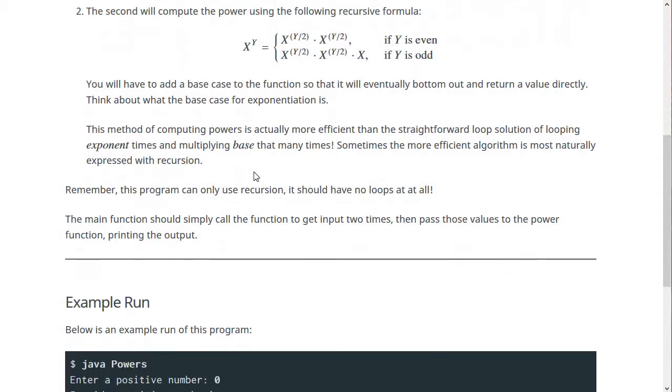Then what you'll do is with these two methods, put them together in a program so that you get the base from the user and an exponent from the user, verifying that they are both positive numbers and then compute the power using your power method and print the answer to the screen.